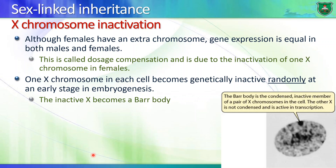X chromosome inactivation is random and occurs during embryogenesis. In any cell in the female body, some groups of cells express the paternal X chromosome while other groups have the maternal X chromosome activated — and the other is inactivated. The inactivated X chromosome is a condensed, clustered, inactive chromosome where genes are not expressed, and it is known as the Barr body.